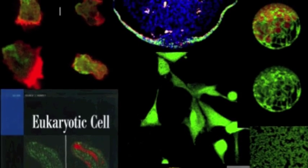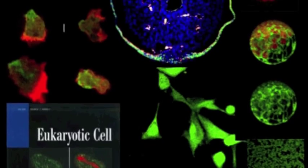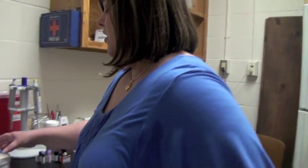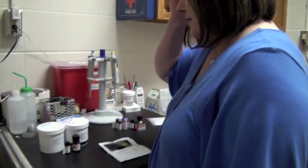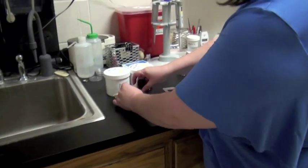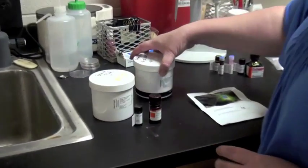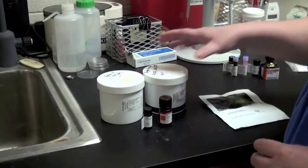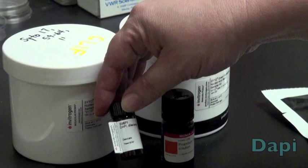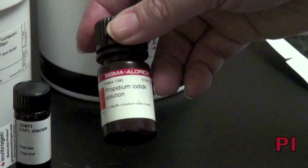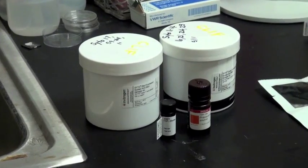We'll start with some nuclear stains. There are lots of different stains that you can use for different organelles. For example, these are nuclear stains and they include things like DAPI, which is going to be a blue nuclear stain, and propidium iodide, or PI, which is going to be a red nuclear stain.